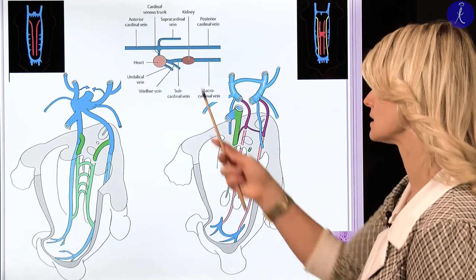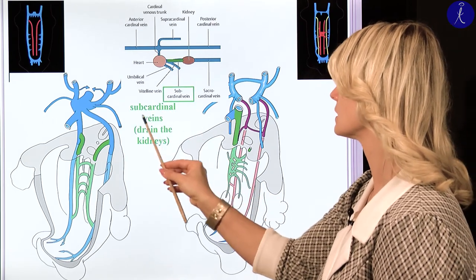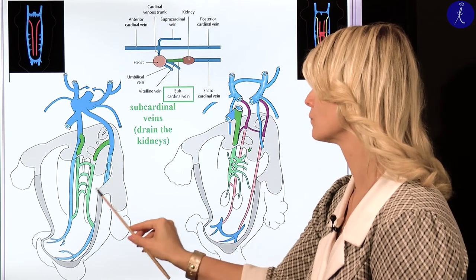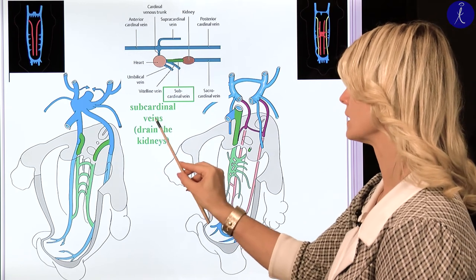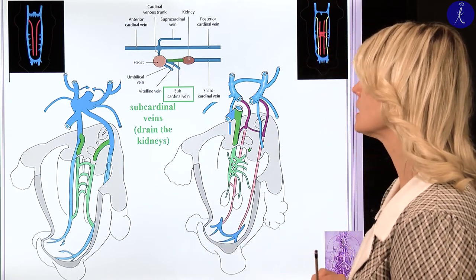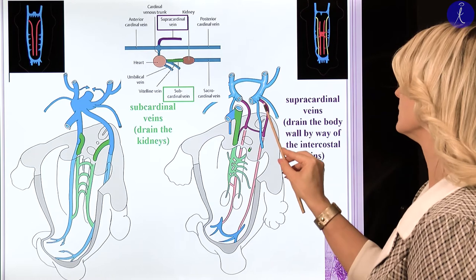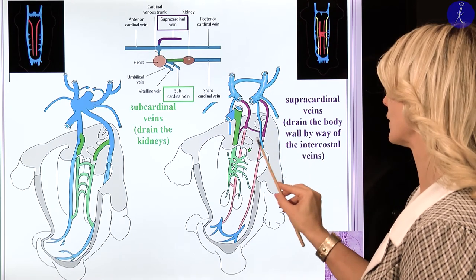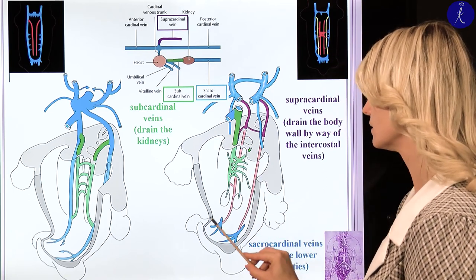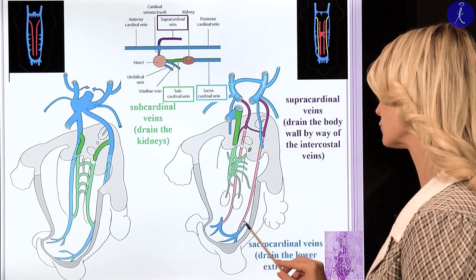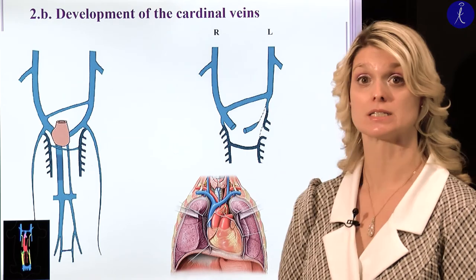Here is the schematic picture. There are three systems: the subcardinal veins, shown in green — this is the venous drainage of the kidney and the gonads. The supracardinal veins are in the posterior body wall; they will drain the body wall by way of the intercostal veins. And finally, the sacrocardinal veins, located in the pelvic region, will drain the lower extremities.